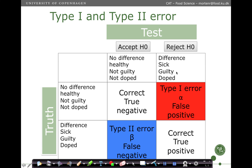We can think about the type 1 error as a test which tries to figure out whether you are sick, guilty, or doped, and it tells us that you are sick, guilty, and doped, but in reality you are not. Especially for those examples, we really wish this error to be low — we do not want to say you are sick and going to die in two days if the fact is that you are healthy. This is the type 1 error, symbolized with alpha, and it is a false positive.